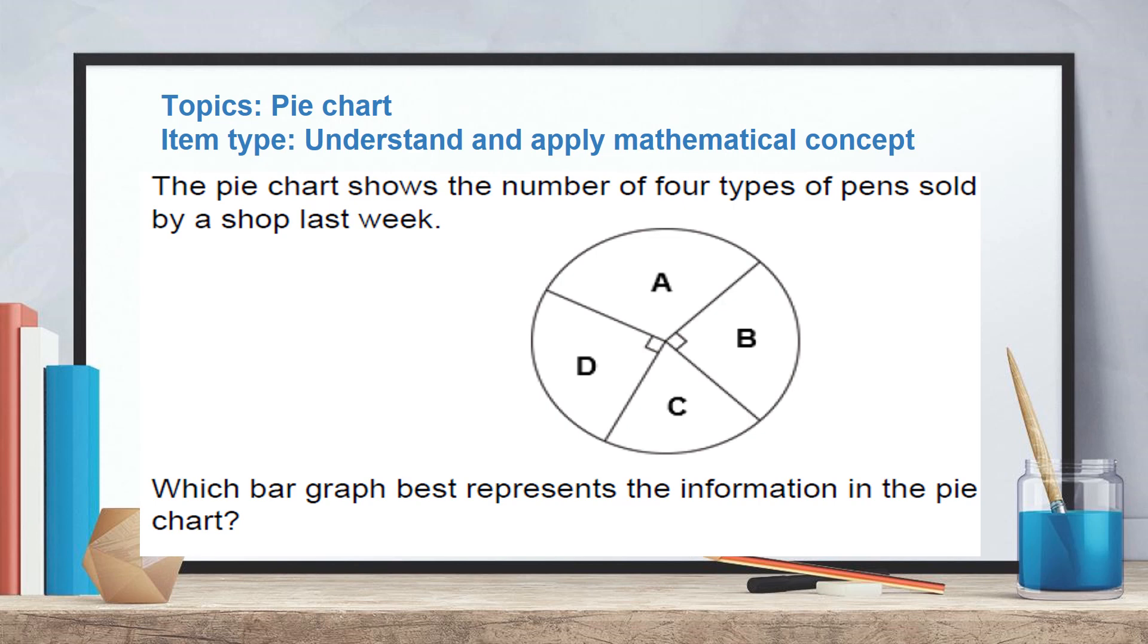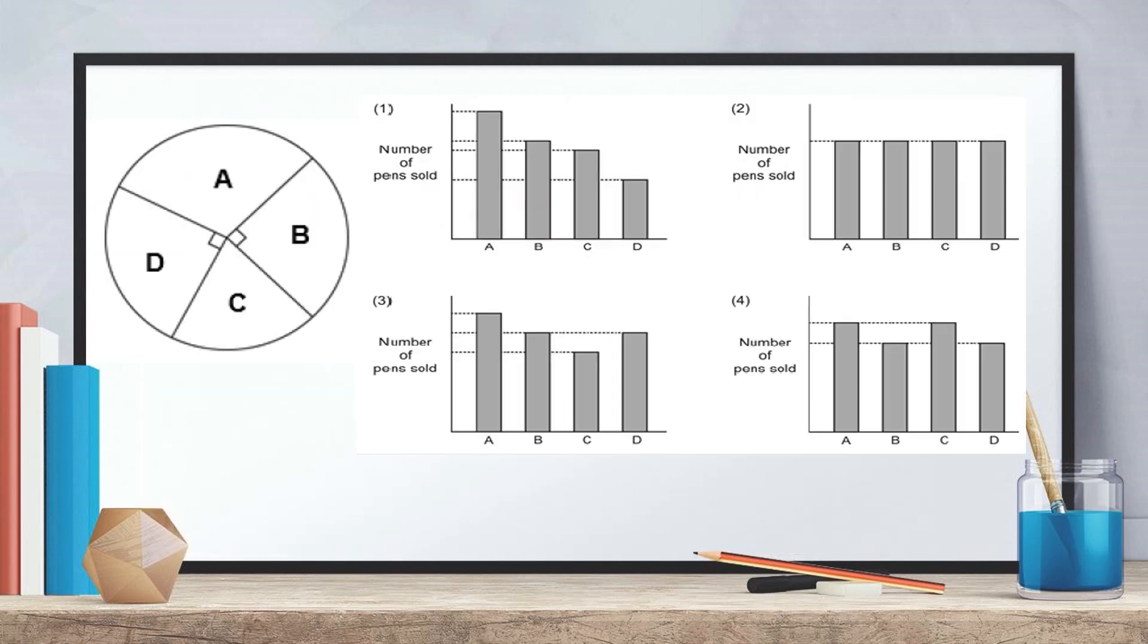Here's another question on pie chart. Again, this is on understand and apply mathematical concept. The pie chart shows the number of four types of pens sold by a shop last week. Which bar graph best represents the information in the pie chart? There are four options given. Students need to understand that part D and part B has equal amount. So from the four options given, option one is definitely out. Next, comparing part A and C. We should notice that part A is larger than part C. So back to the option, option two is not the answer. Option four is not the answer. So the answer is option three. So they need to apply the understanding in this context.